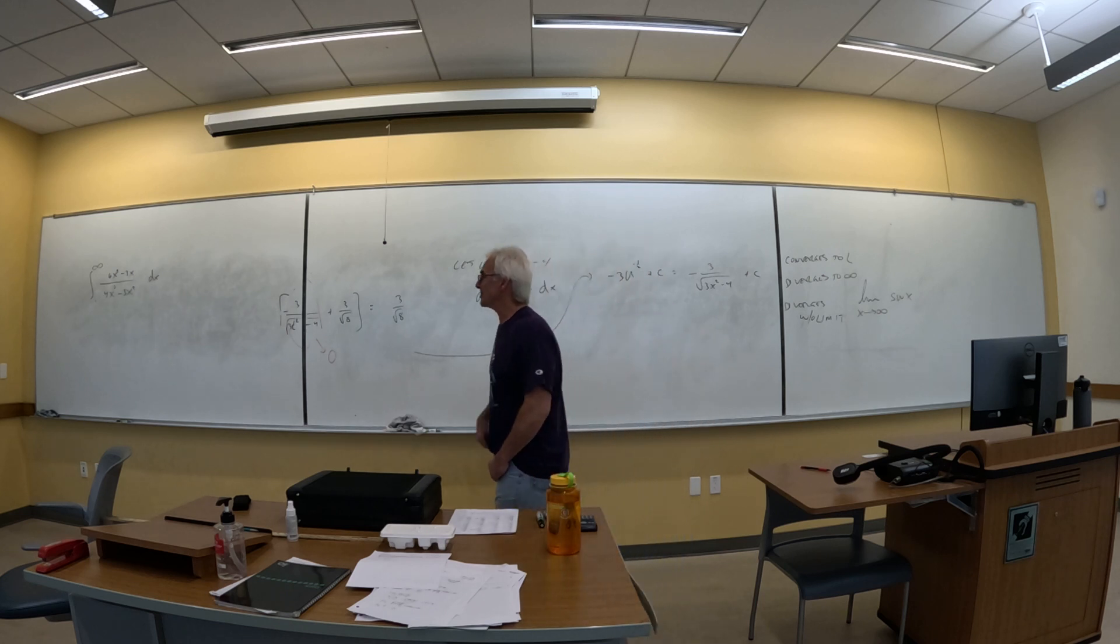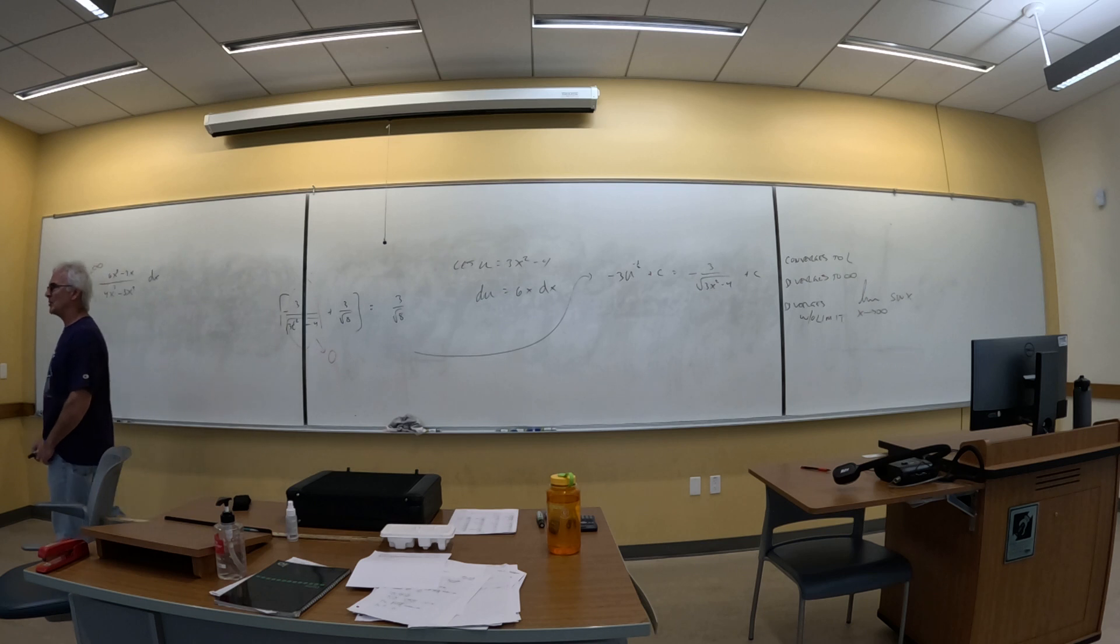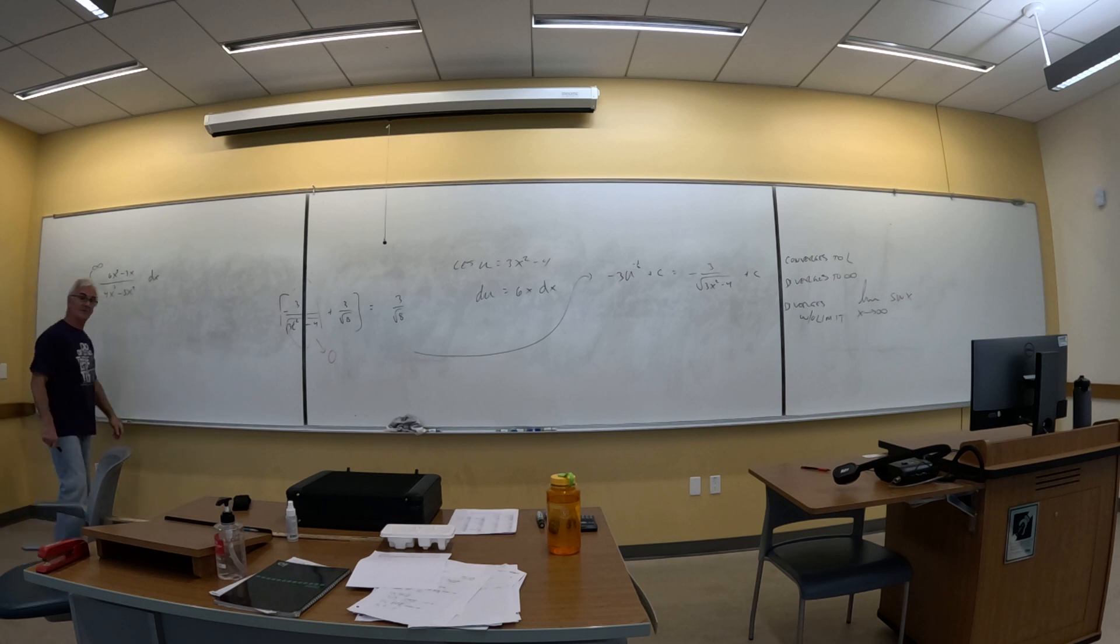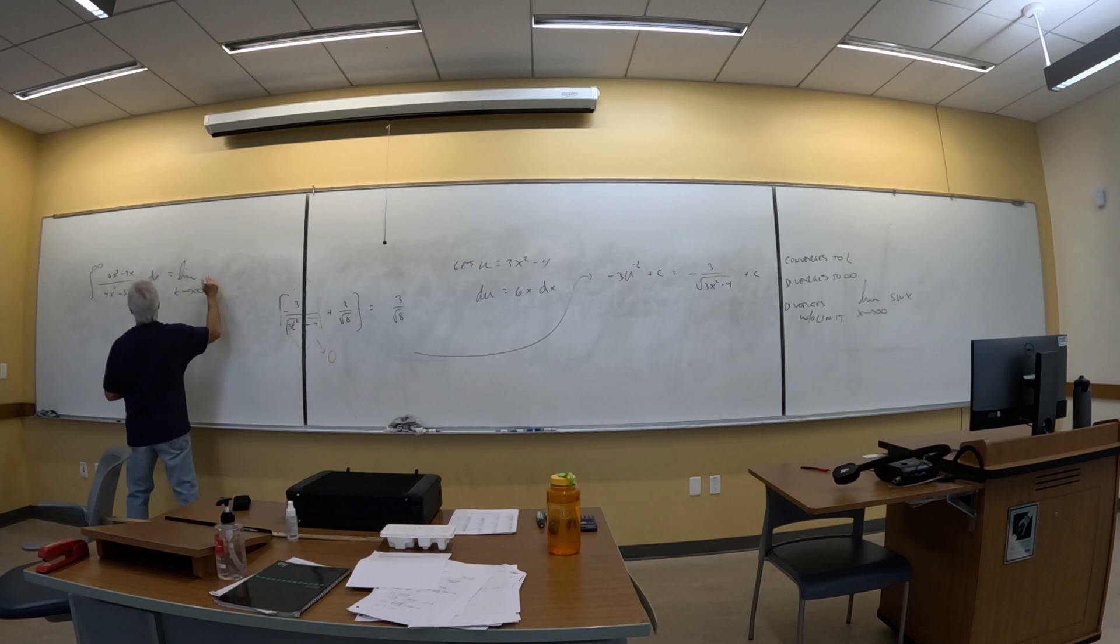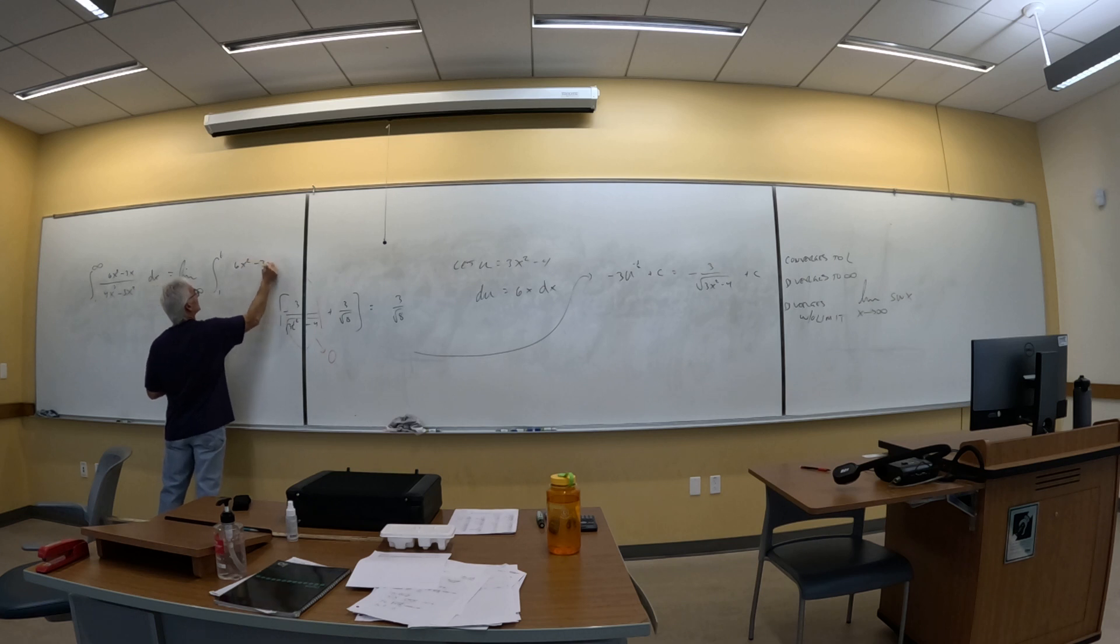Everybody understand what we just said? If I think the numerator is potentially the derivative of the denominator, then through the appropriate substitution I can make it look like one over u. Coefficients aside, coefficients don't affect convergence and divergence. Coefficients only affect what it converges to. If I put a thousand in front, it's going to be a thousand times bigger, but if it diverges it doesn't matter because it's still infinite. So my answer is either infinity or some finite number, but the limit will exist ultimately. My first step is to do this: the limit as t goes to infinity of the integral from one to t of 6x² - 3x over 4x³ - 3x².